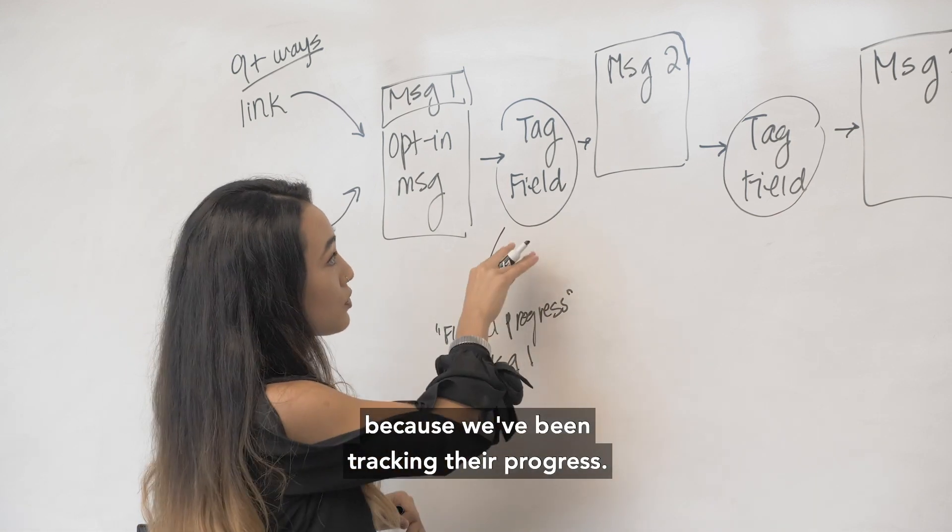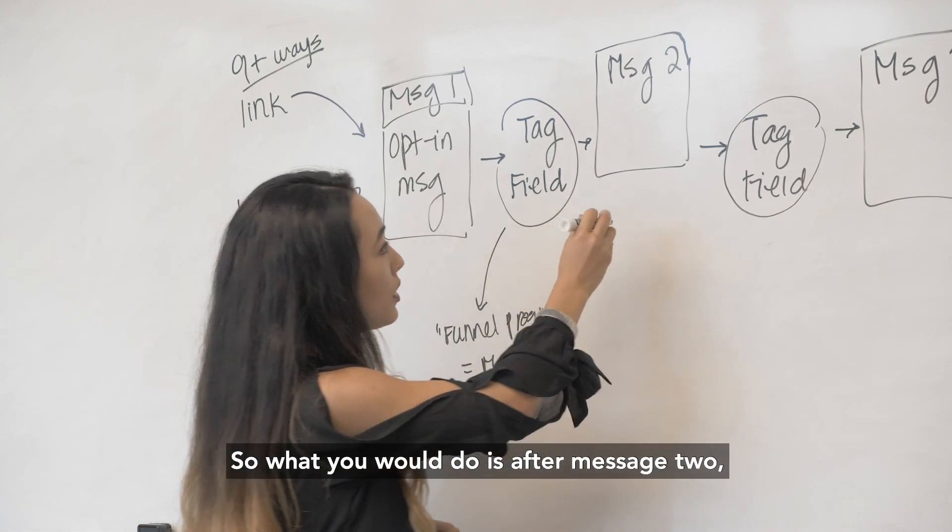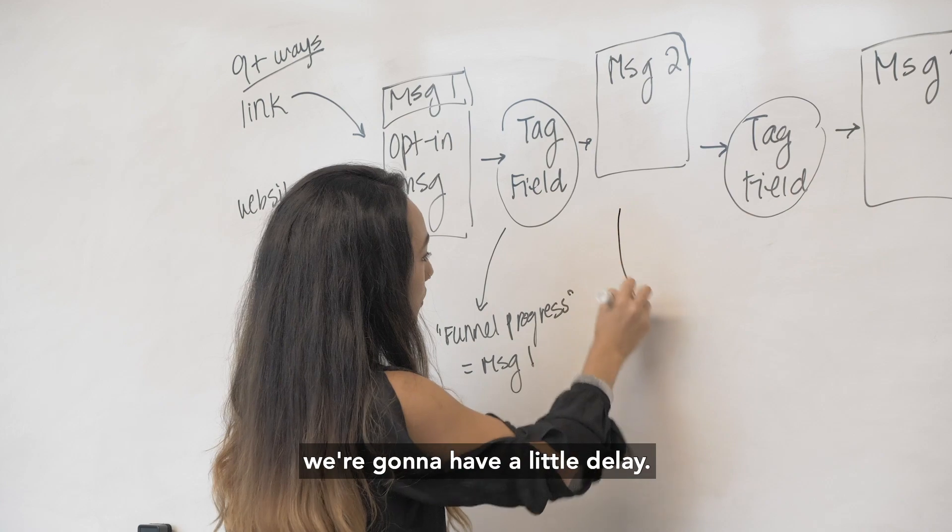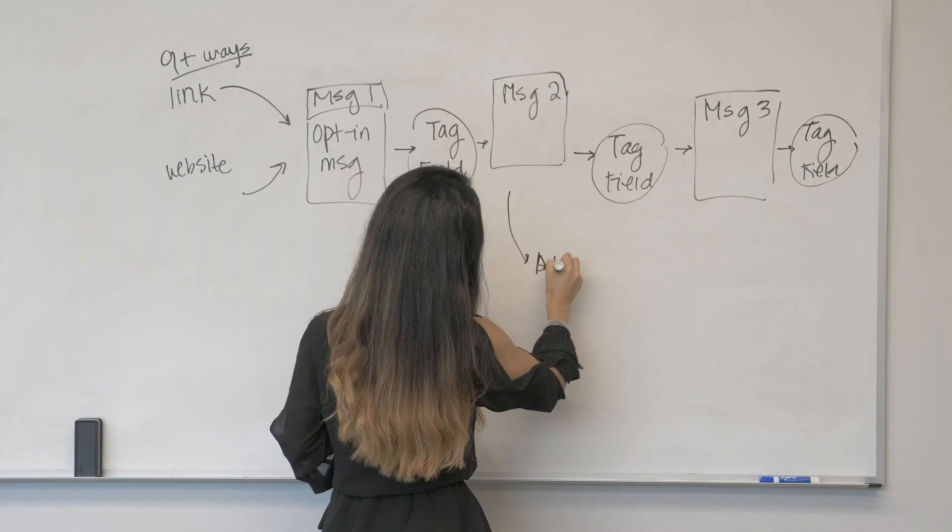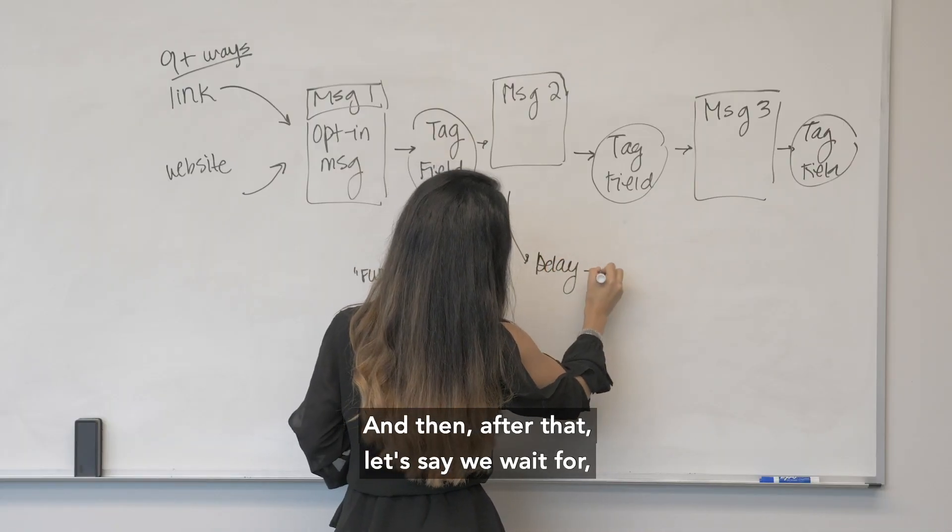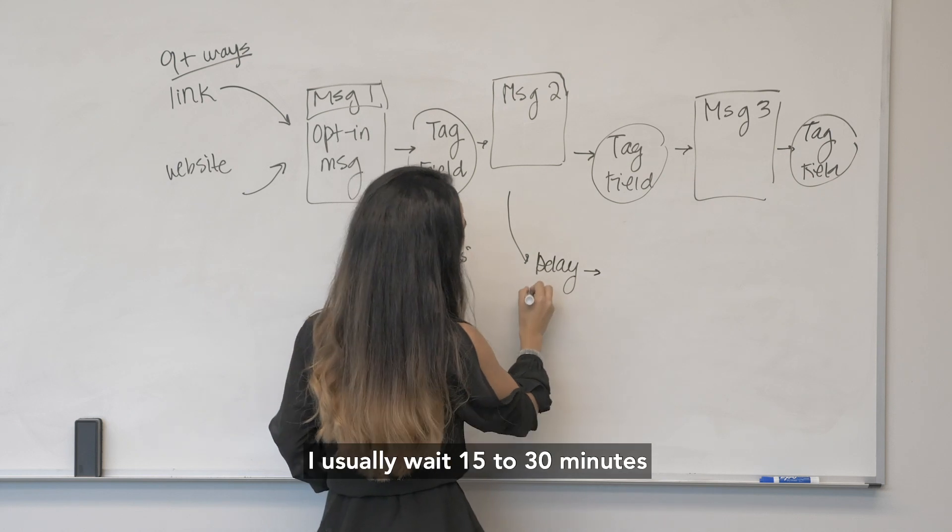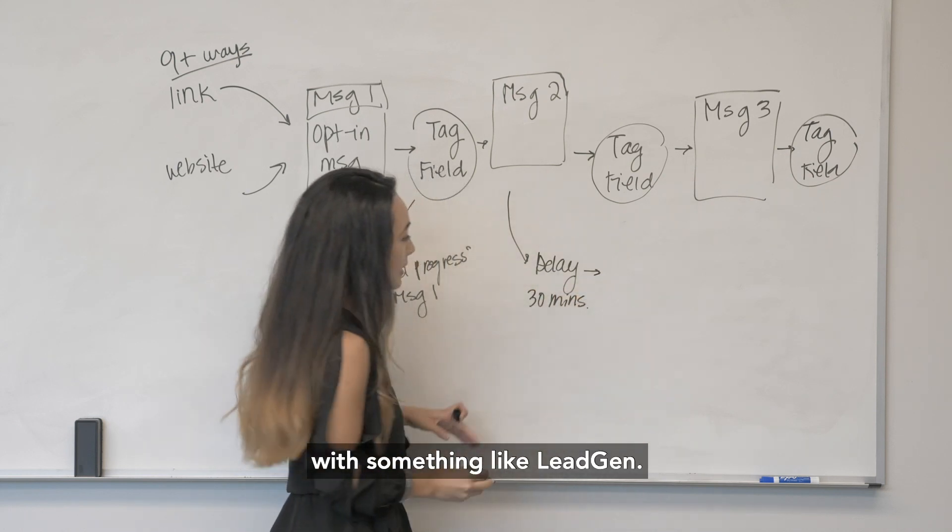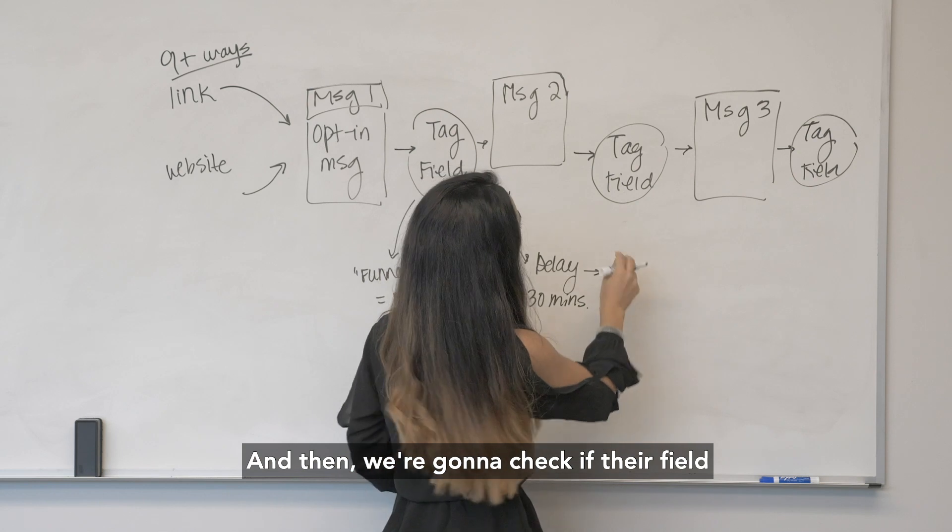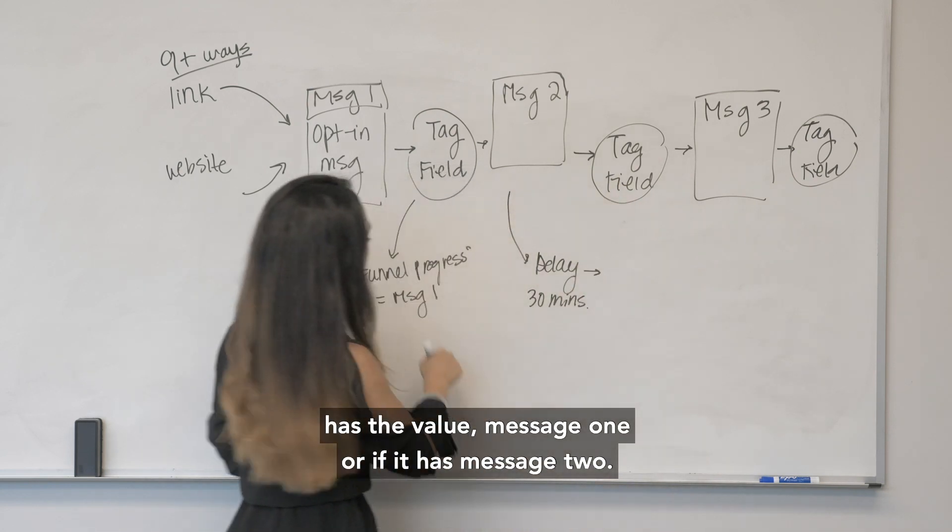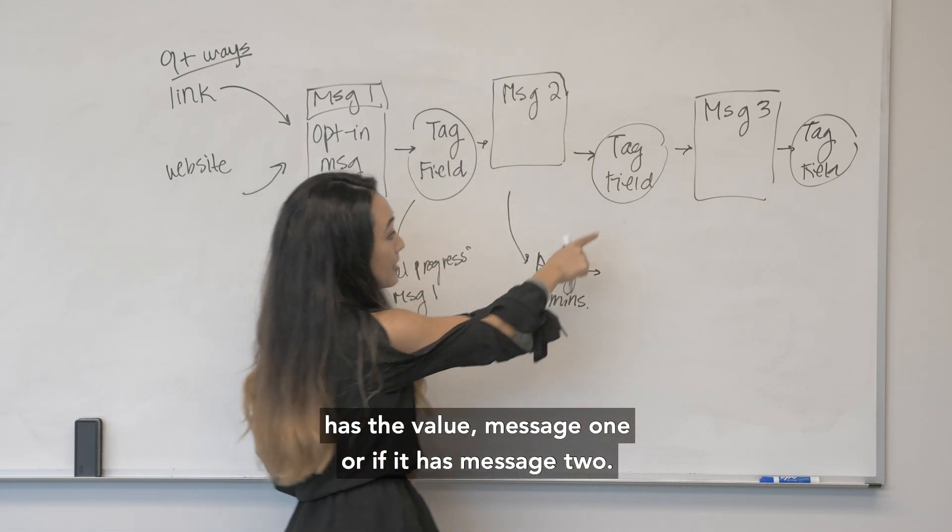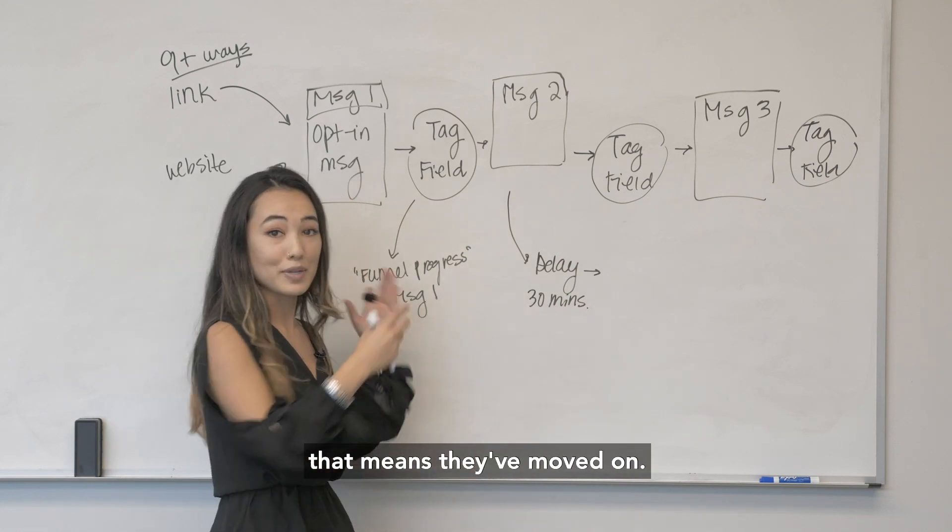So what you would do is after message two we're going to have a little delay and then after that, let's say we wait for, I usually wait 15 to 30 minutes with something like lead gen, and then we're going to check if their field has the value message one or if it has message two. If it does have message two that means they moved on, if it has message one then obviously they didn't get a chance to complete message two.